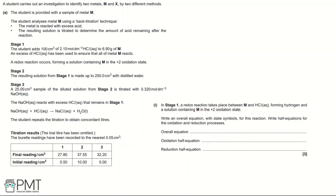In Stage 2, the resulting solution from Stage 1 is made up to 250 cm³ with distilled water. In Stage 3, a 25 cm³ sample of the diluted solution is titrated with 0.32 mol dm⁻³ NaOH. The sodium hydroxide reacts with the excess hydrochloric acid that remains from Stage 1.